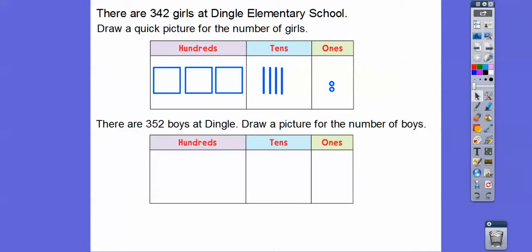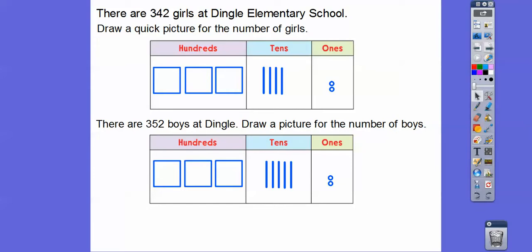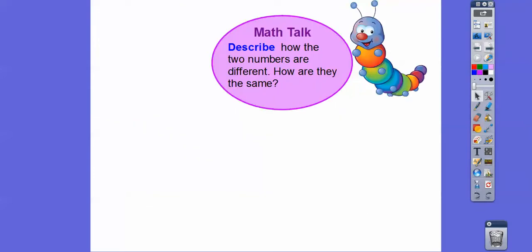And there are 352 boys at Dingle. Draw a quick picture for those ones. This is still three hundreds, this one's going to be five tens, and still two ones. So three hundreds, five tens, and two ones. So we just added ten to that — added another ten stick.